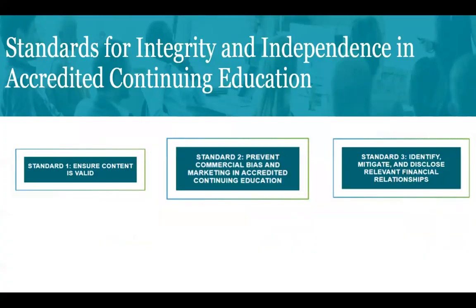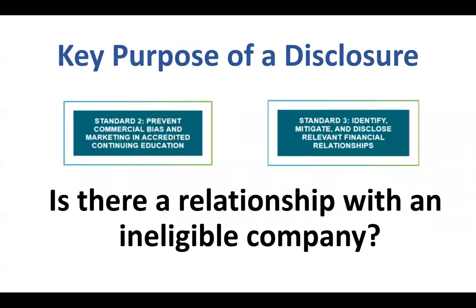The ACCME has five standards, and there are three that are specific to the processes that we will be reviewing today. One of the key things is that all education needs to be unbiased and have no influence from commercial entities, and this is done through a disclosure form. This form asks the individual if they have a relationship with an ineligible company.